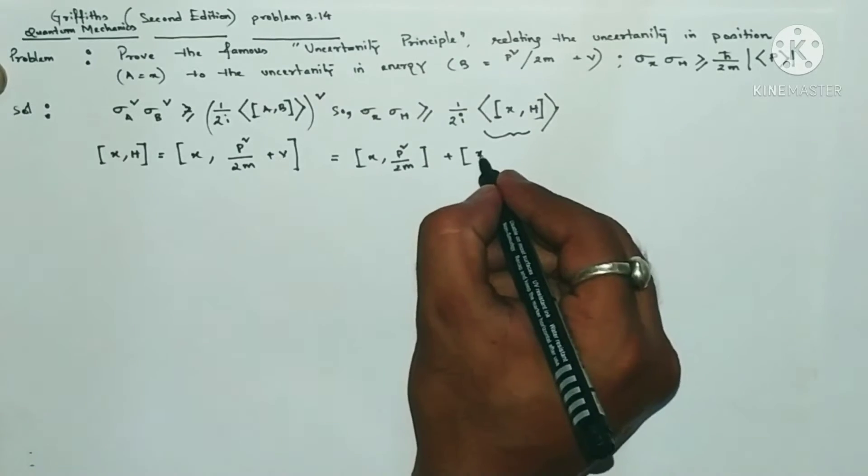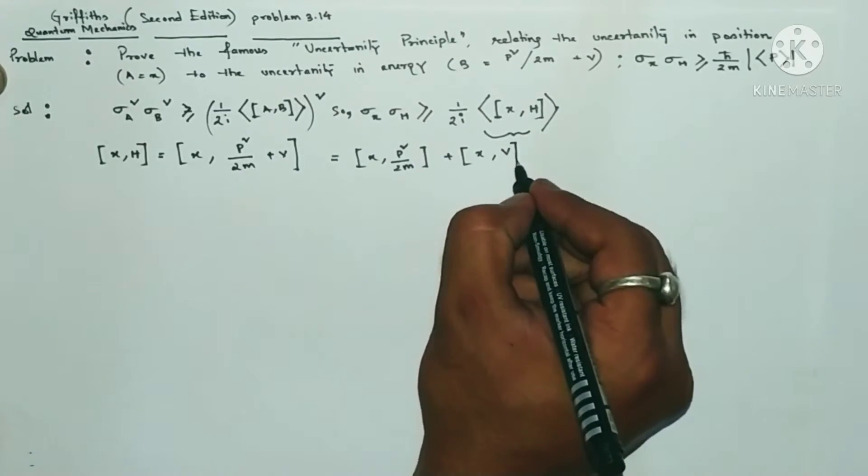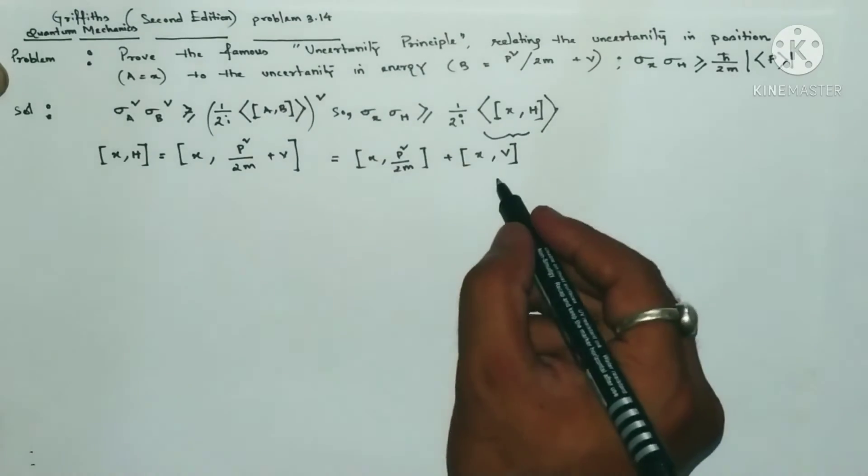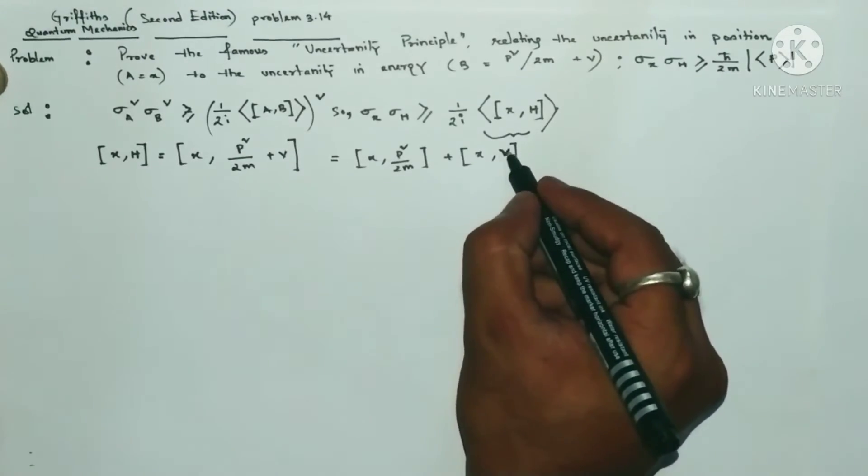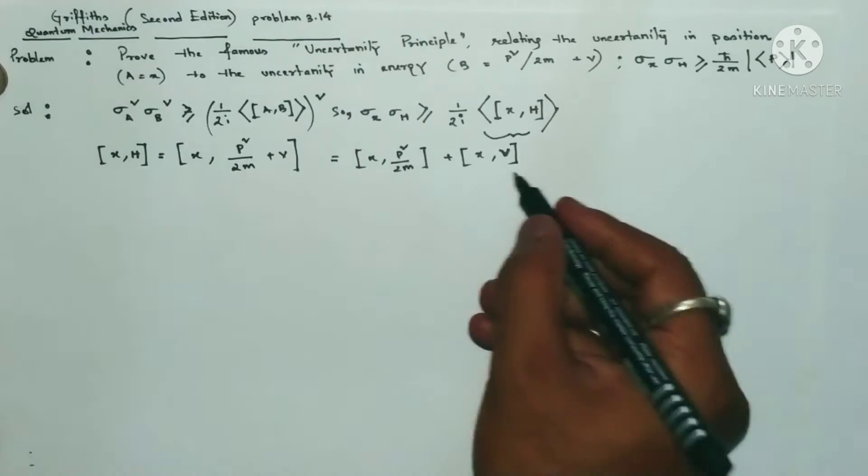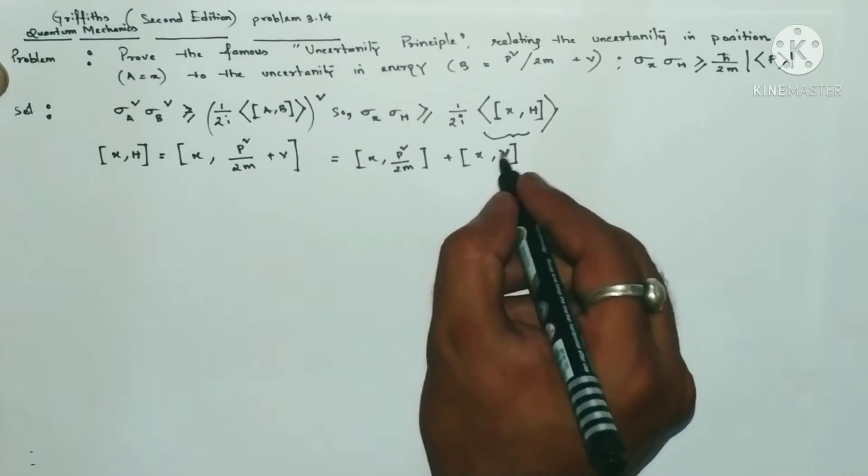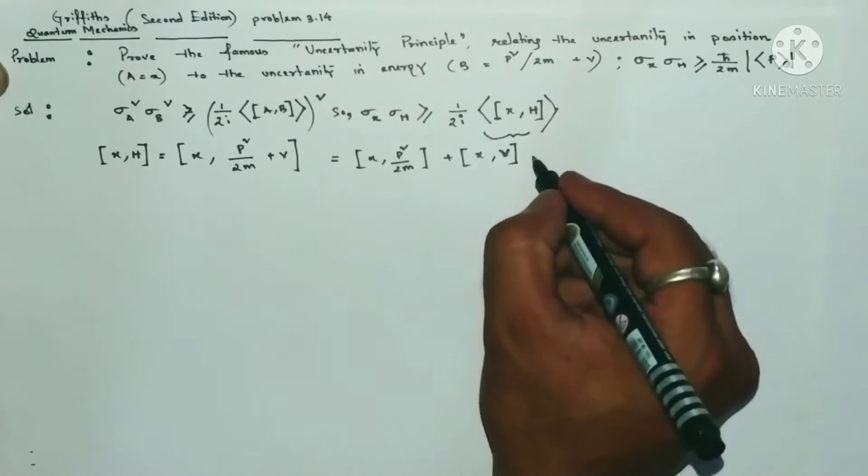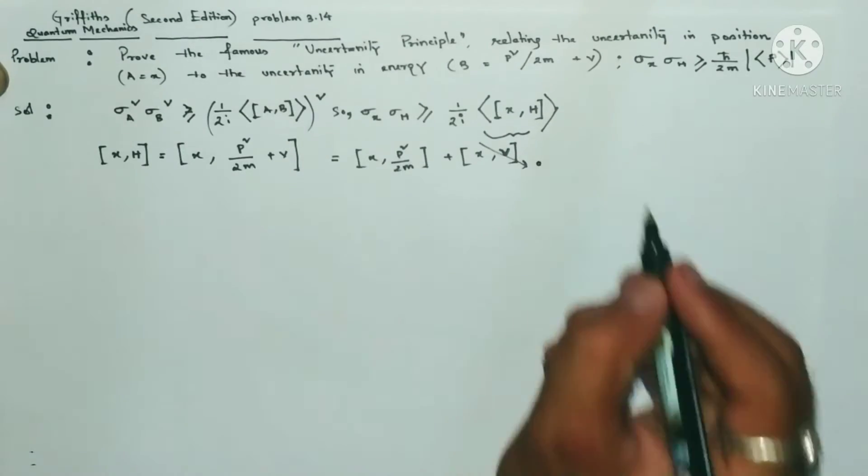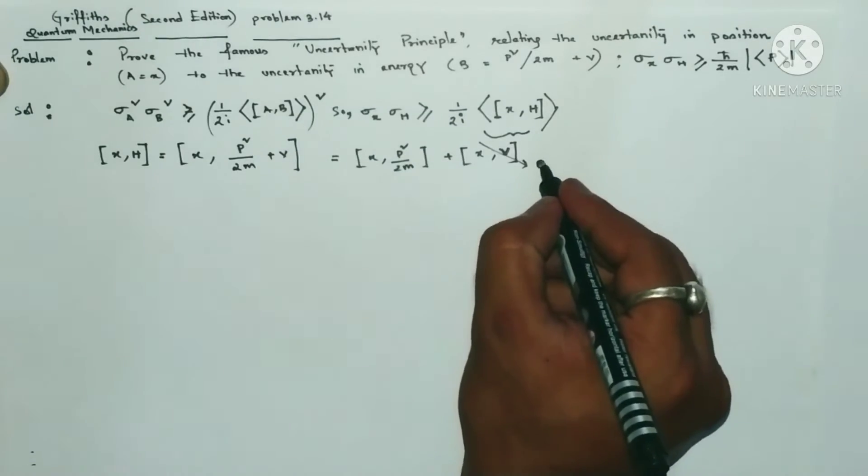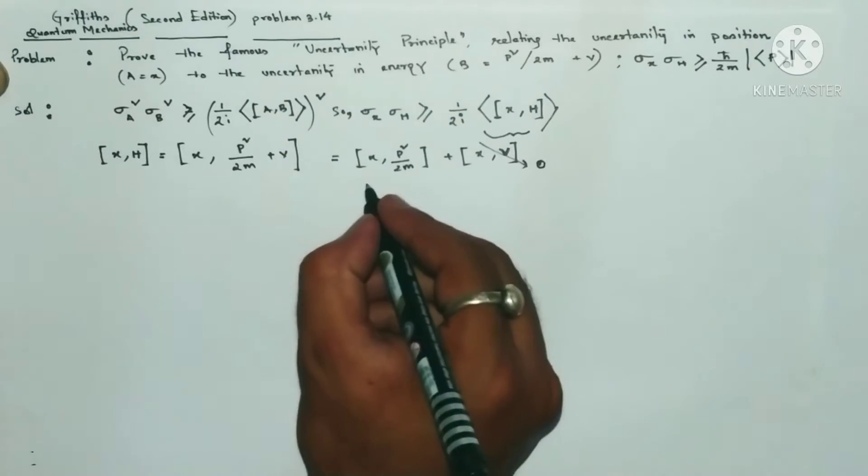We can write X comma P squared by 2m plus X comma V. Here you can see V is not a function of X or V is a constant, so the commutation with constant with respect to X will be zero. So this we can equate as zero.